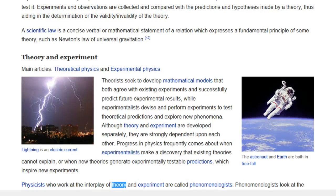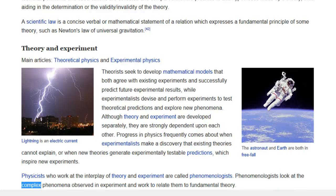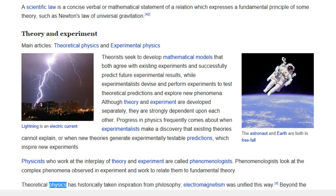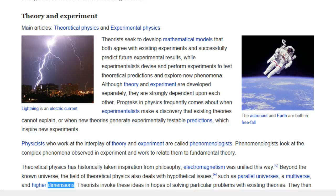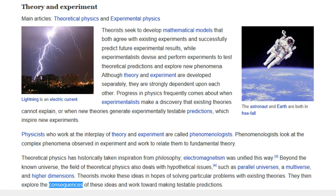Physicists who work at the interplay of theory and experiment are called phenomenologists. Phenomenologists look at the complex phenomena observed in experiment and work to relate them to fundamental theory. Theoretical physics has historically taken inspiration from philosophy. Electromagnetism was unified this way. Beyond the known universe, the field of theoretical physics also deals with hypothetical issues, such as parallel universes, a multiverse, and higher dimensions. Theorists invoke these ideas in hopes of solving particular problems with existing theories. They then explore the consequences of these ideas and work toward making testable predictions.